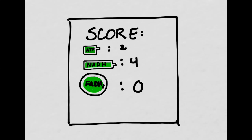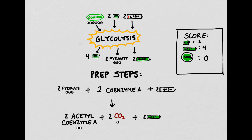Whenever you see any of these molecules in their green battery form, this means they are in the energy-rich form. Before we can move on to the Krebs cycle, which occurs in the mitochondria, we have to rearrange the pyruvate as well as coenzyme A and two more molecules of NAD+. After this rearranging occurs, we create two molecules of acetyl coenzyme A (acetyl-CoA), two molecules of carbon dioxide, and two molecules of NADH.